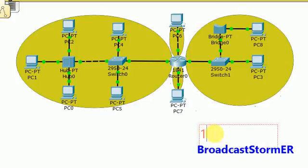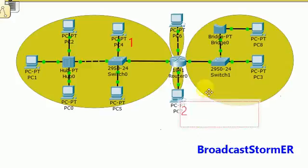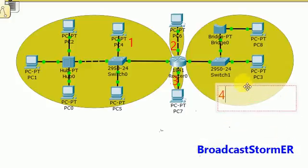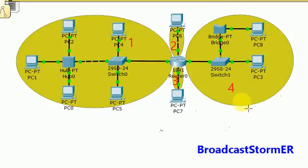We have broadcast domain number one, broadcast domain number two, broadcast domain number three, and finally broadcast domain number four. We can determine then that in this network, we have four broadcast domains.